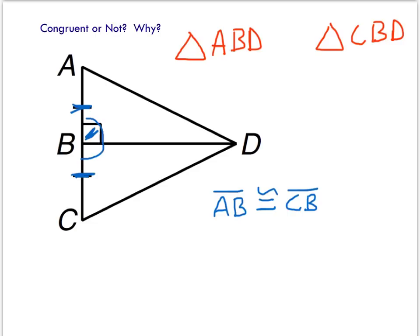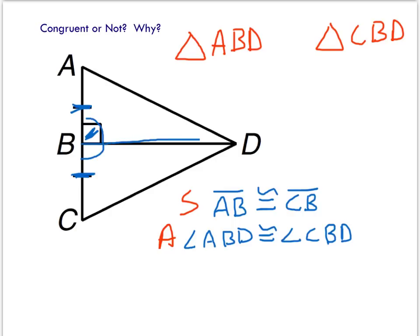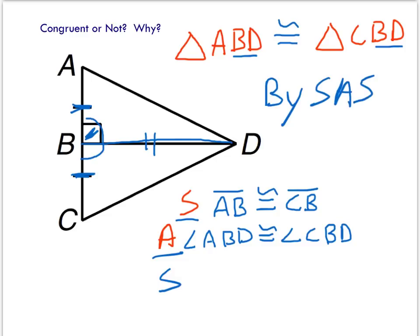So that means angle ABD is congruent. Right now we have a pair of sides and a pair of angles. Then notice that side length BD is a shared side — it's shared in both triangles. So in triangle ABD and triangle CBD, BD has to be the same in both. So yes, we can prove that these two triangles are congruent by side-angle-side.